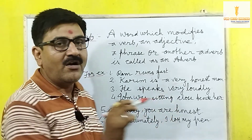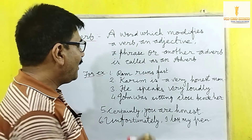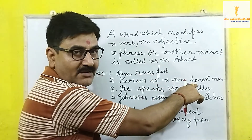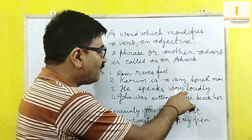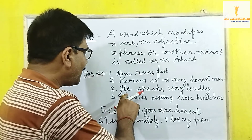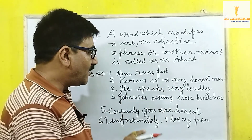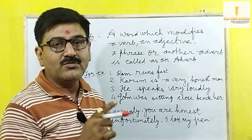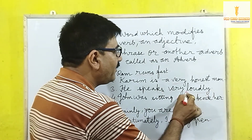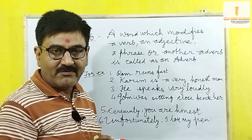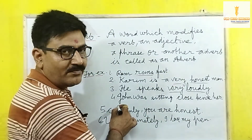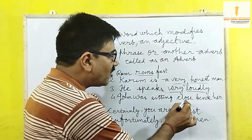Now, 'He speaks very loudly.' पहले देखा कि adverb verb को qualify कर रहा था, दूसरे में adjective को। अब तीसरे में देखेंगे कि adverb को qualify कर रहा है। 'He speaks very loudly' — वह बहुत ऊँची आवाज़ में बोलता है। 'Loudly' तो adverb है ही, लेकिन 'very' उसकी भी विशेषता बतला रहा है — that's why 'very' is also an adverb।